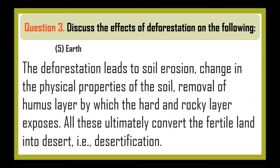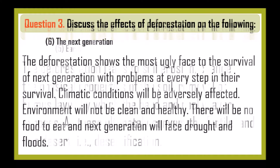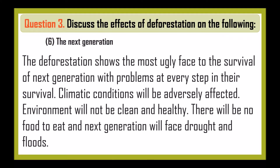Earth: Deforestation leads to soil erosion, changes in the physical properties of soil, and removal of the humus layer, exposing the hard and rocky layer beneath, ultimately converting fertile land into desert — that is, desertification. The next generation: Deforestation shows the most damaging effects on the survival of the next generation — climatic conditions will be adversely affected, the environment will not be clean and healthy, there will be no food to eat, and the next generation will face droughts and floods.